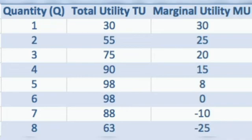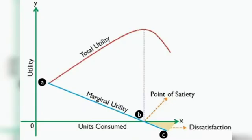Next we will study the relationship between total utility and marginal utility. We will understand this through a tabular form and a graph. For example, if you take one mango and consume it, your total utility is, say, 30 and your marginal utility is also 30. Total utility means total satisfaction, and marginal utility means additional satisfaction. Now if you consume 2 mangoes after the first, what will happen to your total utility?